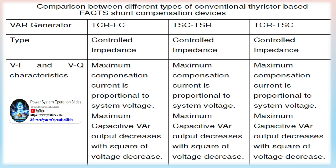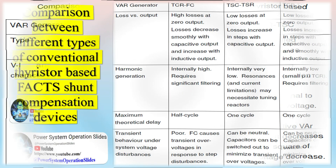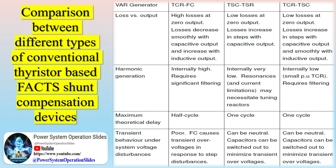There are additional challenges as well. FACTS devices can introduce harmonics into the power system, which can affect power quality and equipment performance, and mitigation strategies need to be implemented to minimize this impact. Furthermore, as FACTS devices are increasingly integrated into the grid, they become vulnerable to cyber attacks, and robust cybersecurity measures are essential to protect them from unauthorized access and manipulation. Overall, while FACTS technology plays a vital role in enhancing the performance of power grids, addressing these operational challenges is crucial to ensure safe, reliable, and efficient operation.